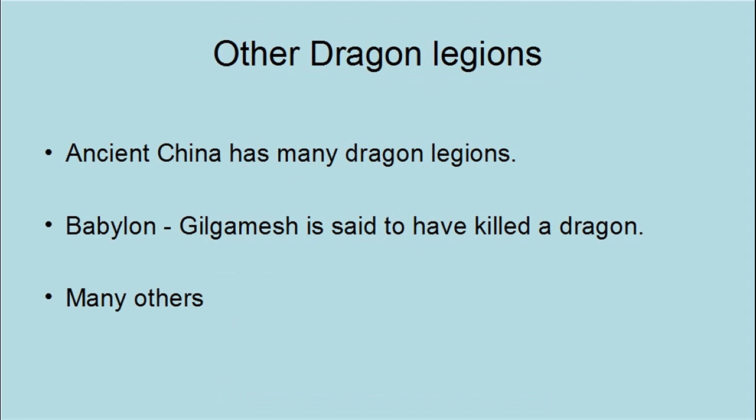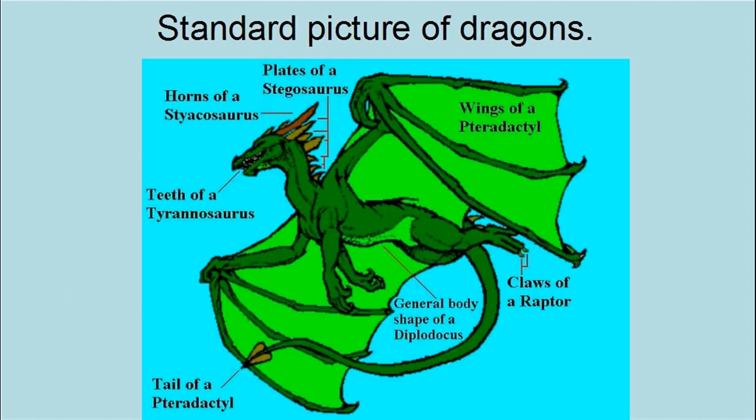Ancient China has many dragon legends, though they do tend to give them more of a snake-like body. In the ancient Babylonian epic of Gilgamesh, Gilgamesh is said to have killed a dragon. When you look at the standard picture of a dragon, it seems to be an amalgam of various kinds of dinosaurs — they often have wings like a pterodactyl, as well as a Rhamphorhynchus tail flange, the general body shape of a Diplodocus, the teeth of a Tyrannosaurus rex, claws like a raptor, and plates like a Stegosaurus.